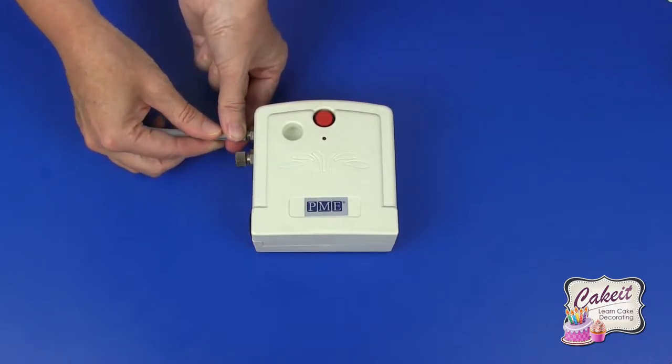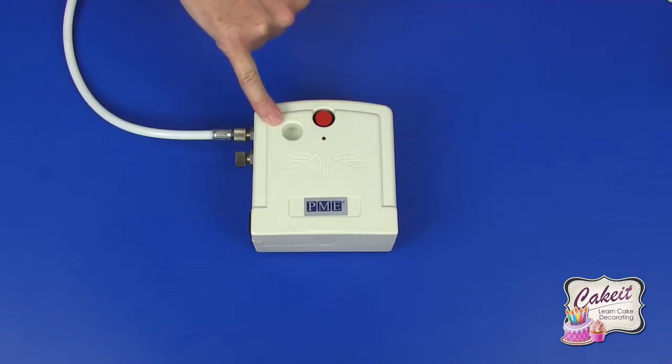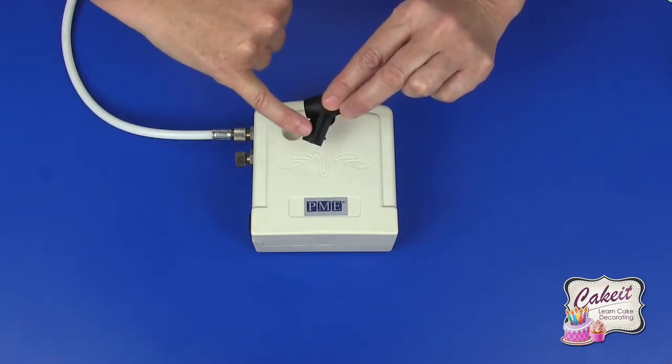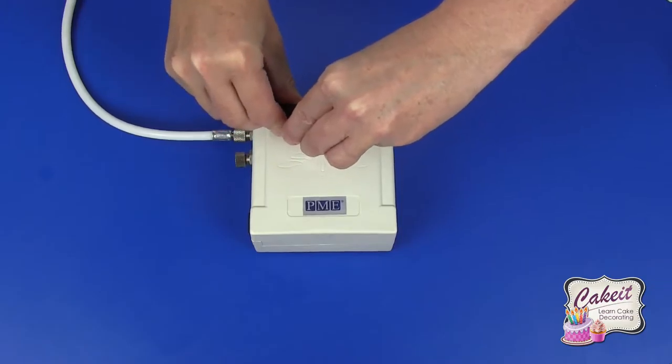Like so, and next we're going to add in the holder for the airbrush into the recess. Onto here I've just put a little bit of release agent to make sure that this pushes into the recess easily.